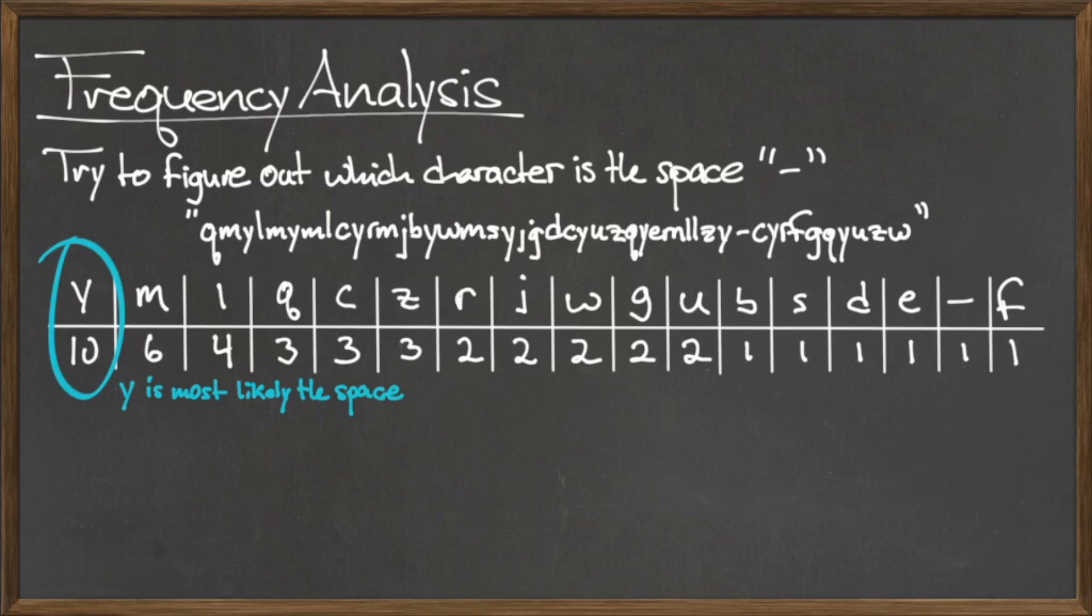So, more than likely, the character space has been encoded as the letter Y, which would indicate a shift by two characters in the Caesar cipher.